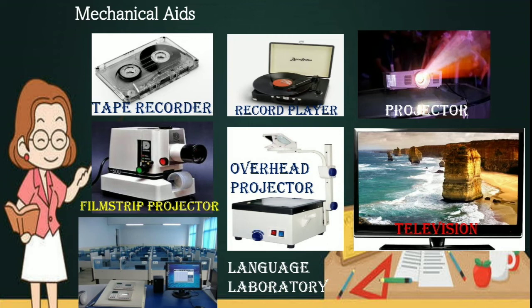The next one is projector, commonly used for projection of illustrations and photographs. Next is filmstrip projector, which can be used in a partially darkened room. Next, overhead projector, used for projection of a table, a scheme, a chart, or a plan. The next one is television, which would make it possible to demonstrate the language in increasingly varied everyday situations and is commonly used nowadays. The last one is language laboratory — a special classroom designed for language learning.